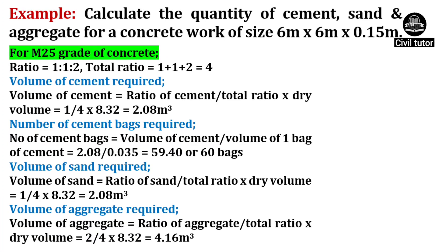For M25 grade of concrete, the ratio is taken as 1:1:2. Hence the total ratio will be equal to 4.